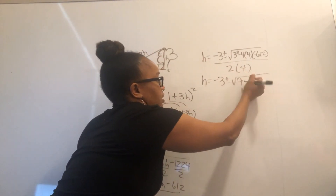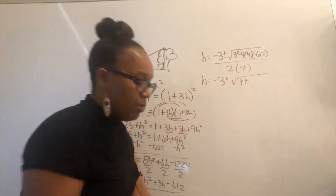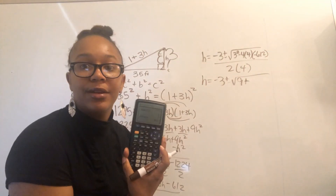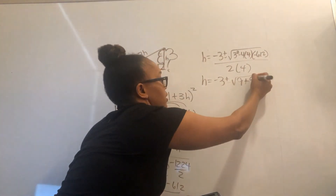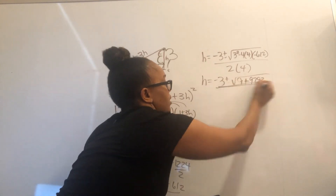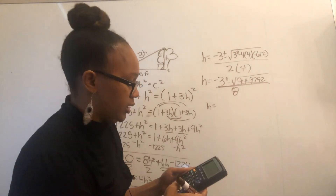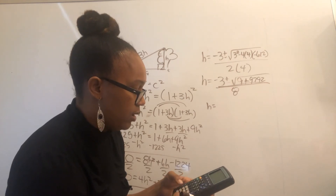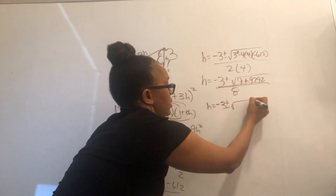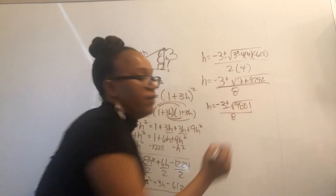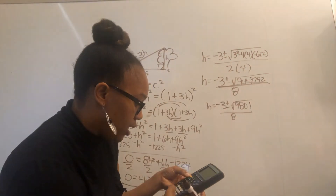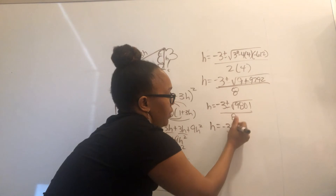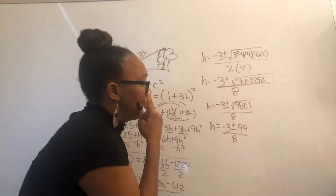Simplifying: negative 3 plus or minus square root of 9 plus — since the two negatives make a positive — four times 4 times 612 is 9792. So we have square root of 9 plus 9792, which is square root of 9801. The square root of 9801 is 99. So H equals negative 3 plus or minus 99 over 8.